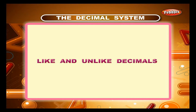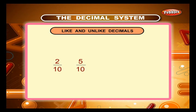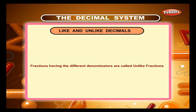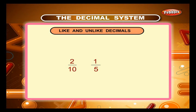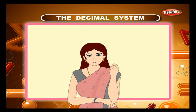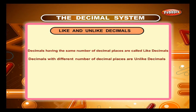Like and unlike decimals. You know that fractions having the same denominators are called like fractions. Thus, 2/10, 5/10, 15/10 and 105/10 are like fractions. Fractions having different denominators are called unlike fractions. Thus, 2/10, 1/5 and 20/100 are unlike fractions. Just as we have like and unlike fractions, we also have like and unlike decimals. Decimals having the same number of decimal places are called like decimals. Decimals with different number of decimal places are unlike decimals.